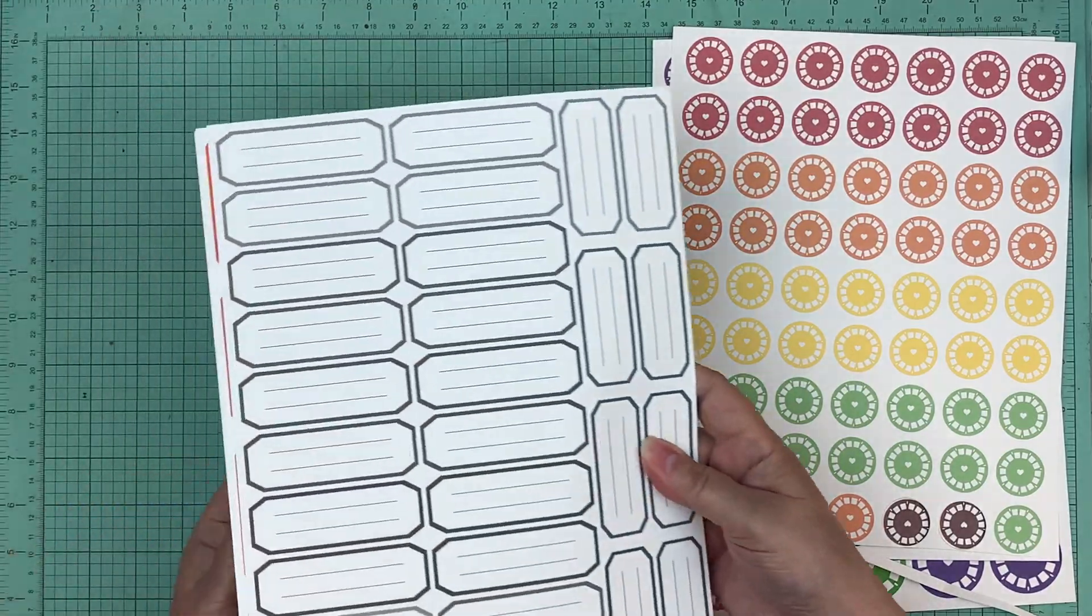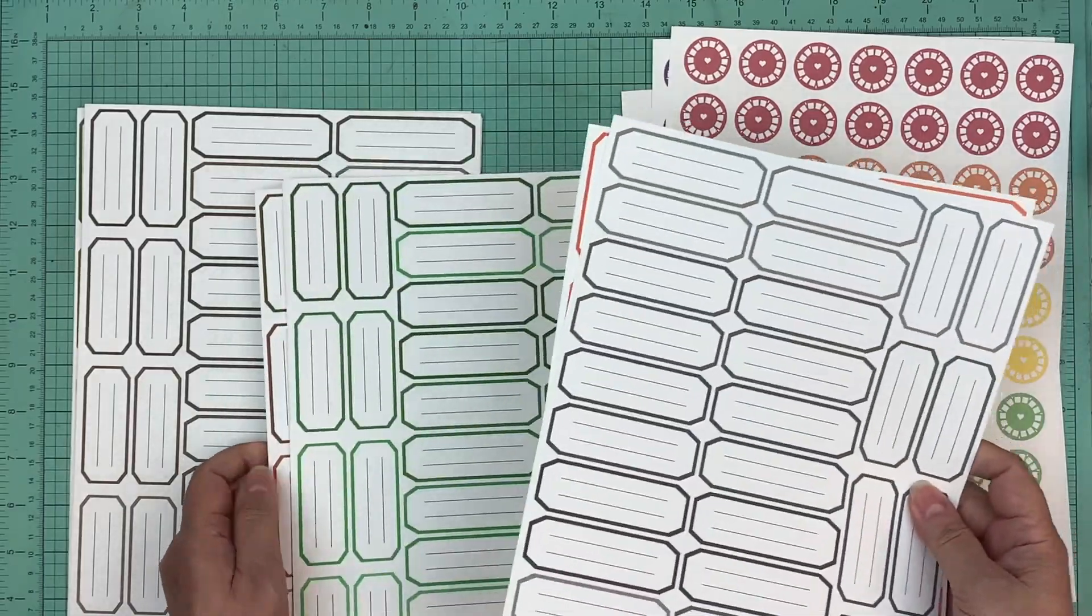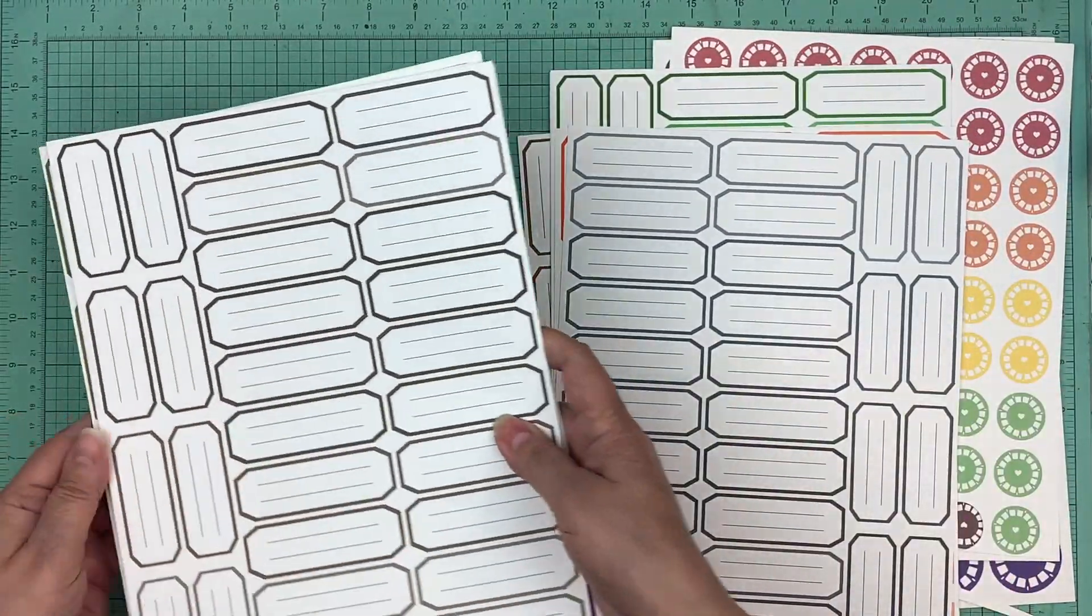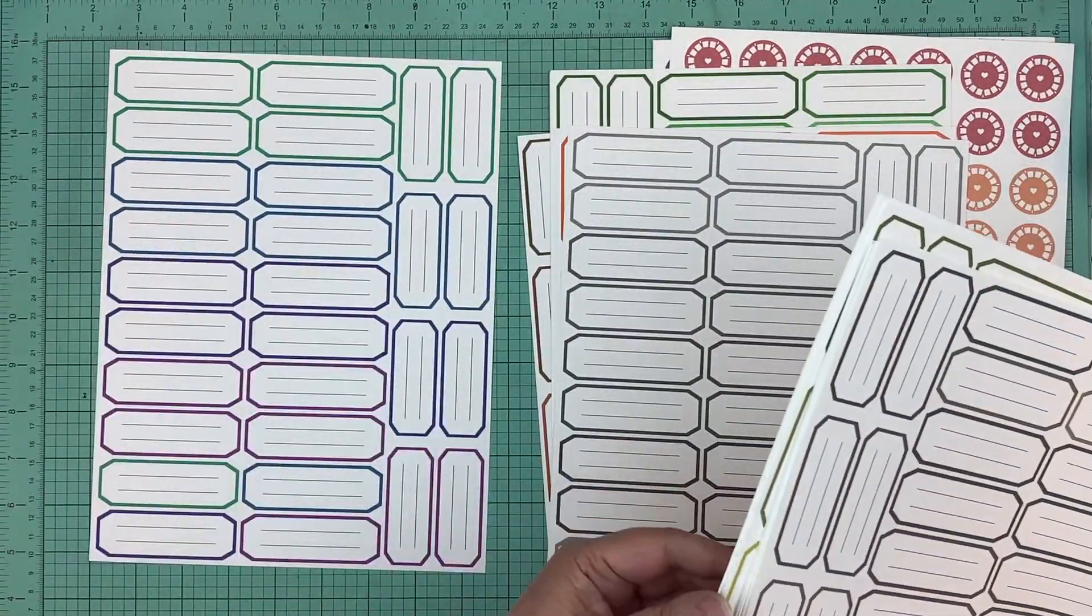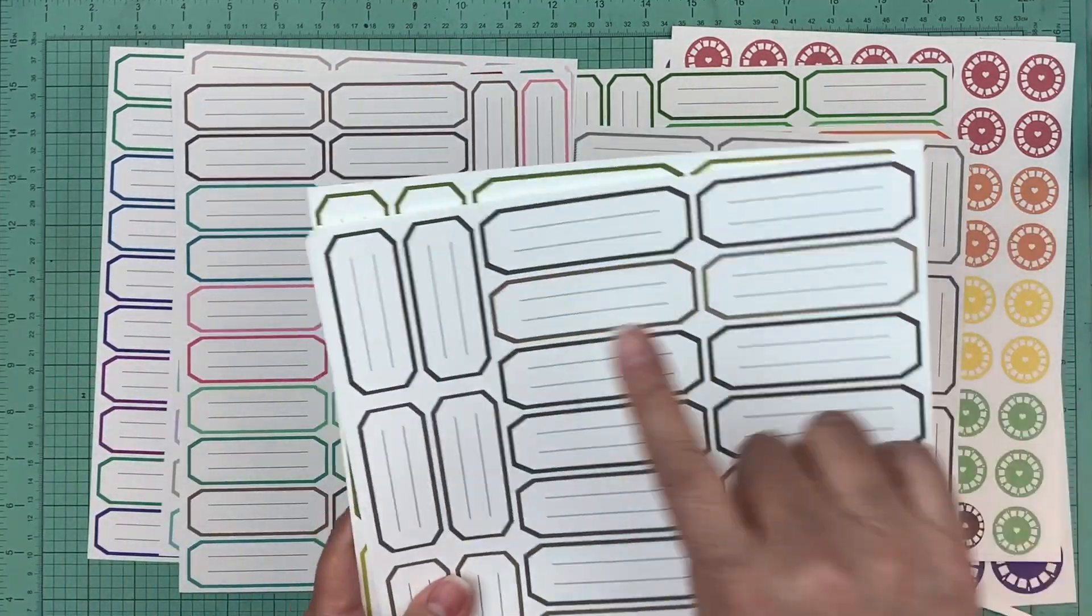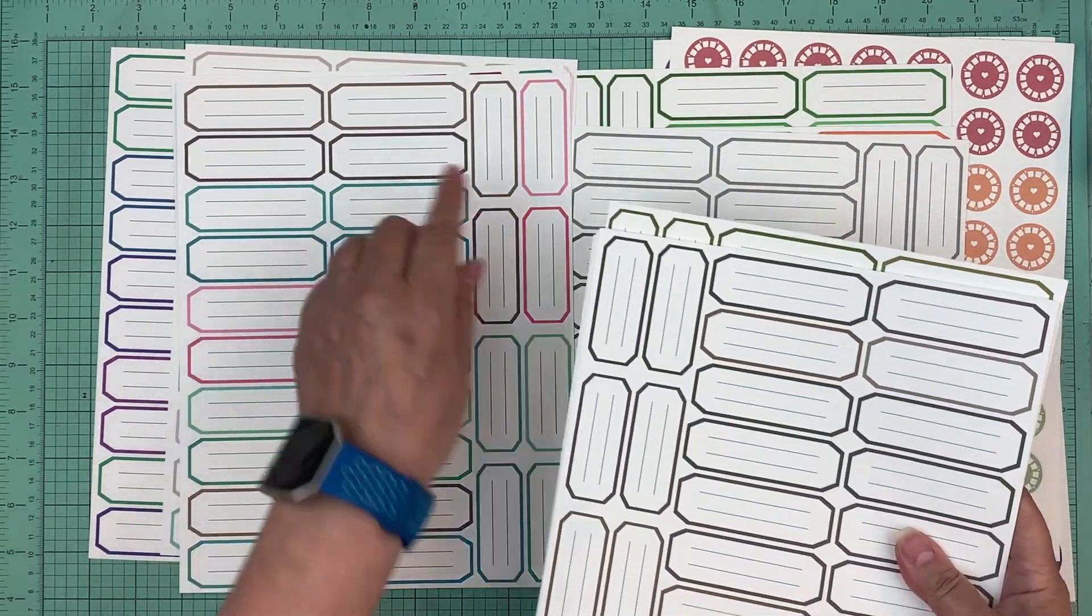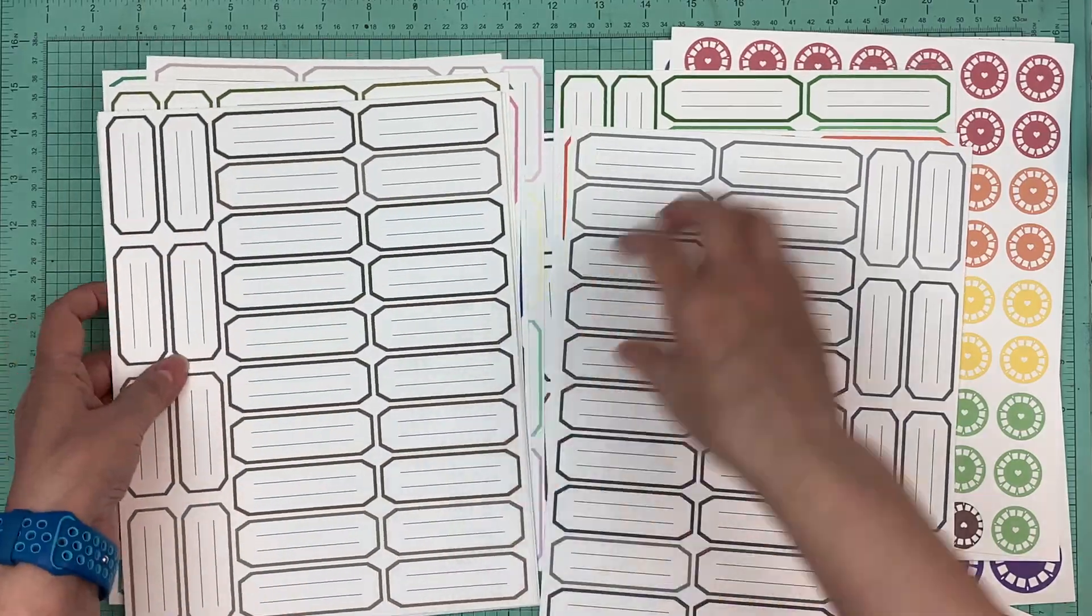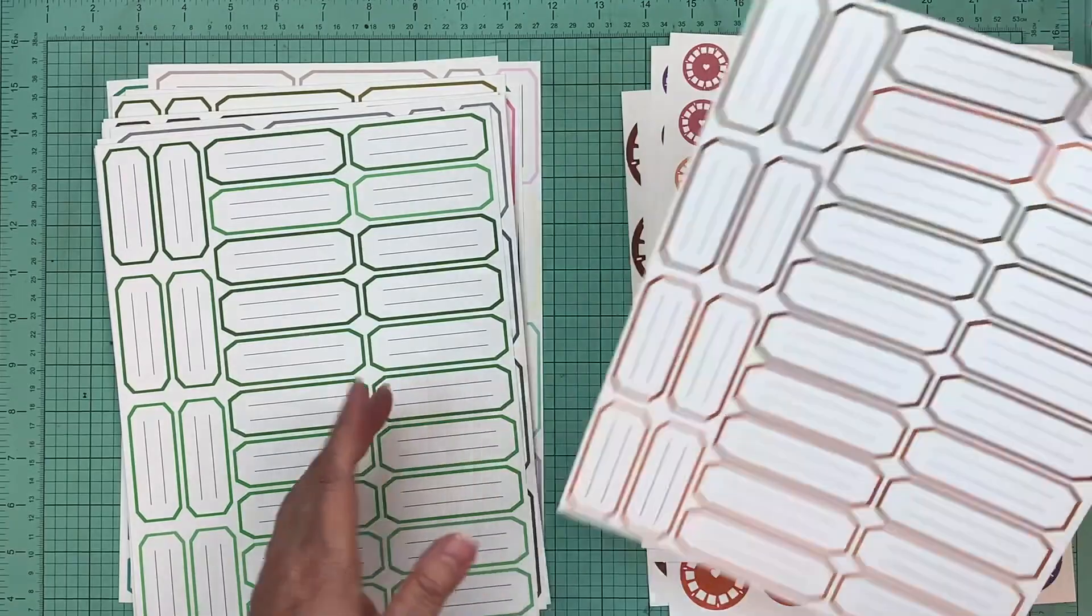And then the last thing that's new this week, we have these journaling labels. And again they come in all the different colors and then also in the assorted packs. And I really like that there's two lines for journaling. We kept the lines in the center here all consistent with all the labels, a light gray, so it goes with all the different colors.